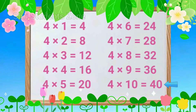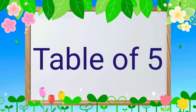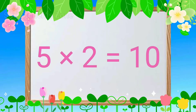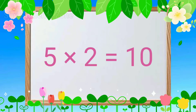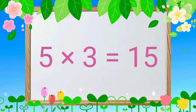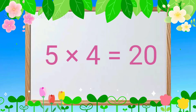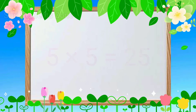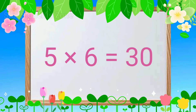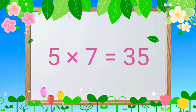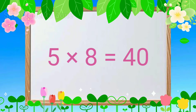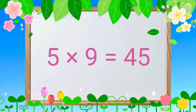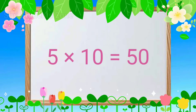4 10s are 40. Table of 5. 5 1s are 5, 5 2s are 10, 5 3s are 15, 5 4s are 20, 5 5s are 25, 5 6s are 30, 5 7s are 35, 5 8s are 40, 5 9s are 45, 5 10s are 50.